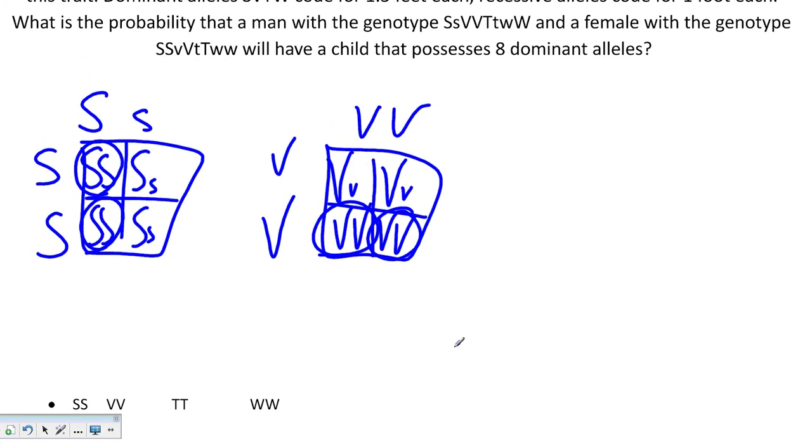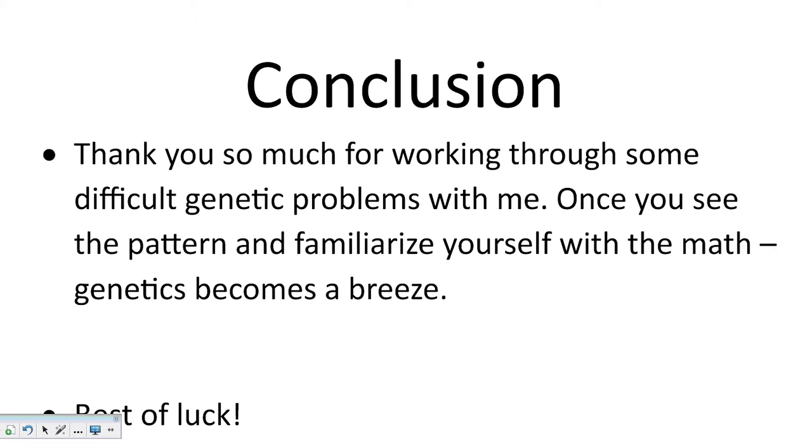The easiest thing to do when you run these polygenic problems is to start off with what you know, find the pattern, and follow your simple steps, whether it's drawing a Punnett square to find probabilities or running a binomial expansion to find the F2 generation. I hope that you've enjoyed working through some of these with me. Once you find the pattern and familiarize yourself with it, all of this will become a breeze. Best of luck, thanks!